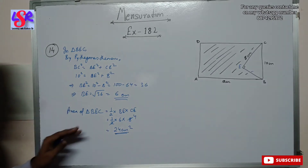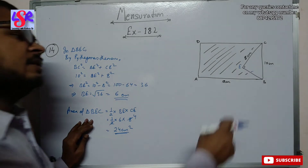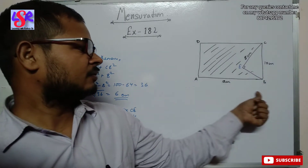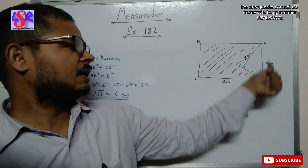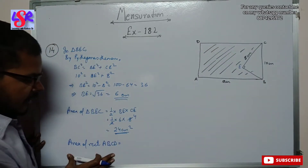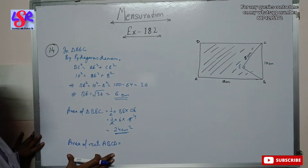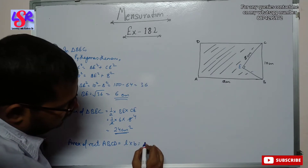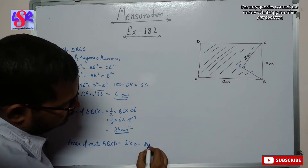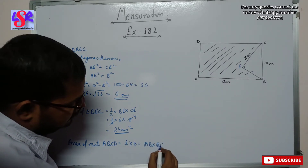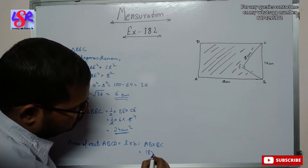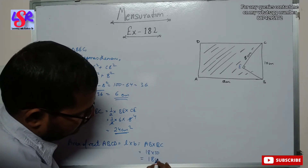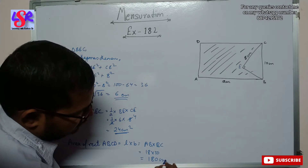After getting the area of triangle BEC as 24 square centimeters, we now calculate the area of rectangle ABCD. The area of rectangle ABCD equals length into breadth, so AB into BC equals 18 into 10, which is 180 square centimeters.